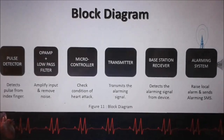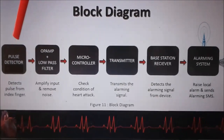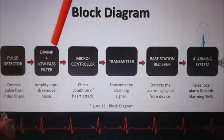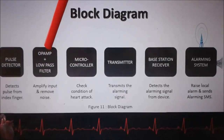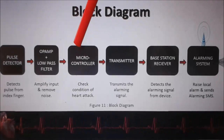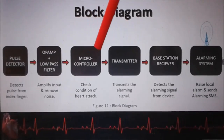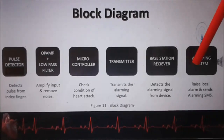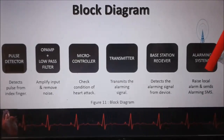Now let's talk about the block diagram. The fingertip sensor takes your heartbeat, which goes to a low-pass filter and op-amp that removes noise and amplifies the signal, since the sensor output is not strong enough for the microcontroller to analyze. The microcontroller then calculates your heart pulse rate and checks whether it is below 60 or above 100. If so, it uses the transmitter to signal the base station alarm and sends SMS — five SMS in intervals of 5 seconds — until someone replies or calls.